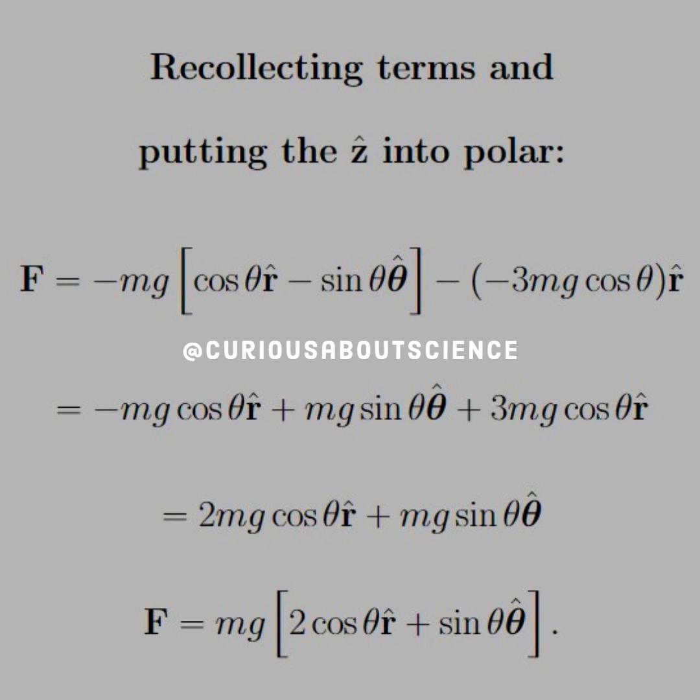What we can also do at this time is put Z-hat into its polar equivalents, since we're dealing with theta-hat and R-hat only. Once we do this, then it's just a matter of simplifying everything down. We see that everything is a common factor of Mg cosine or Mg sine. We boil that down, and then we factor out an Mg.